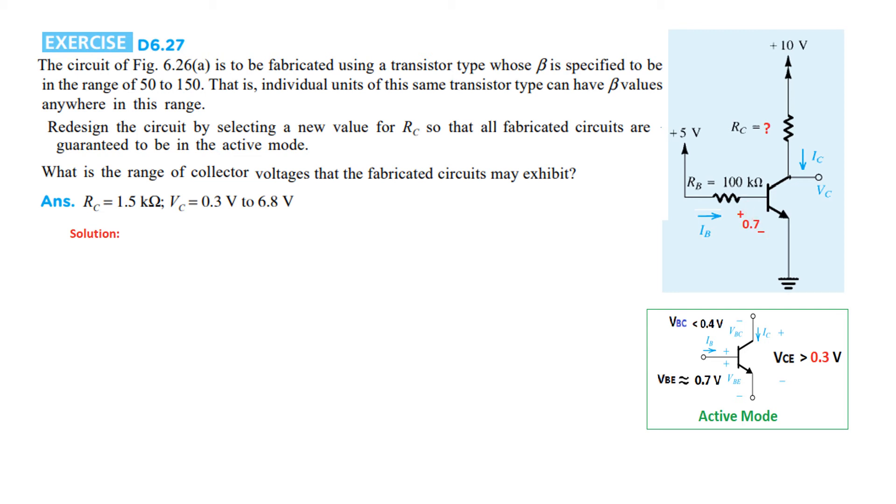We know VBE = 0.7V, so as we did in the previous case, we'll find IB. IB = (5V - 0.7V) / 100kΩ = 0.043 milliamperes. We know that IC = β·IB. For β = 50, IC = 50 × 0.043mA = 2.15 milliamperes. For β = 150, IC = 6.45 milliamperes. These are the two extremes of collector currents.